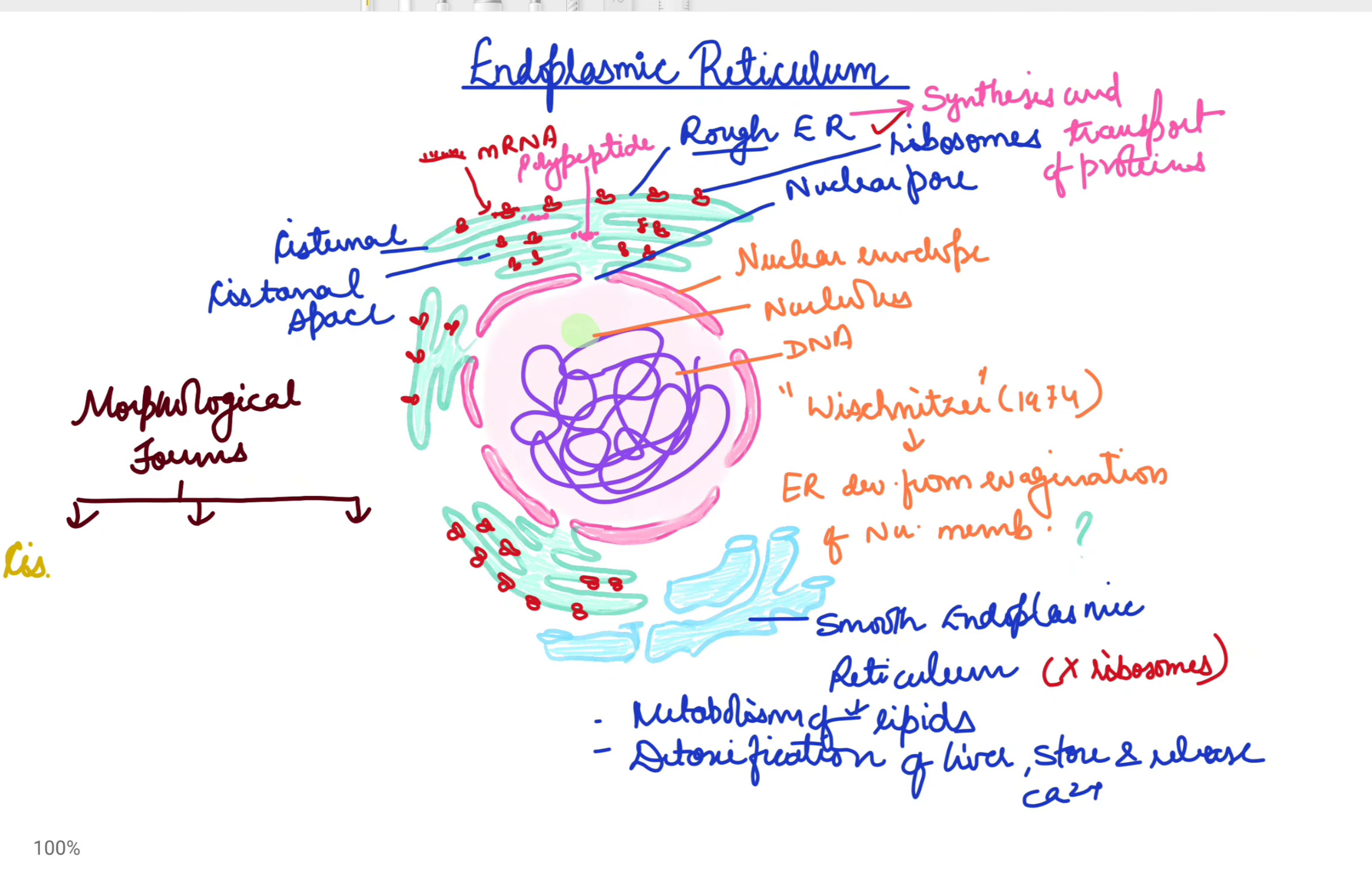Second is the vesicles, the spherical sac-like structures without ribosomes. And the third type is tubules, the irregularly branched tubular structures that participate in the synthesis of hormones.